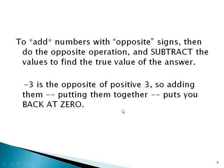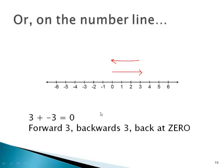To add numbers with opposite signs, then do the opposite operation and subtract the values to find the true value of the answer. Negative 3 is the opposite of positive 3, so adding them, putting them together, puts you back at zero.